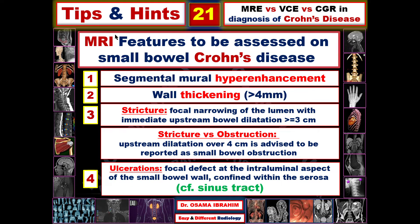Ulceration is another MRI finding in Crohn's disease, meaning a focal defect of the intraluminal aspect of the small bowel wall. This defect is confined to the serosa; if it passes beyond the serosa it is diagnosed as a sinus tract — this is the landmark distinguishing ulceration from a sinus. These features are the most common MRI findings diagnosable as Crohn's disease, particularly on MR enterography.